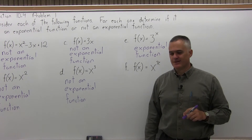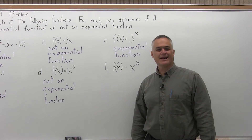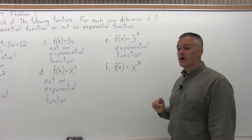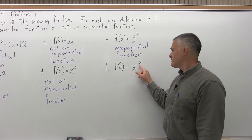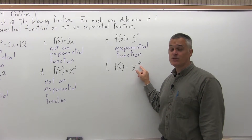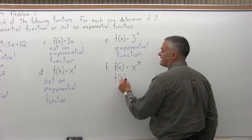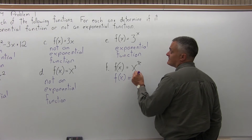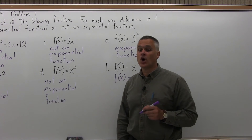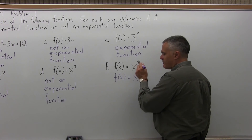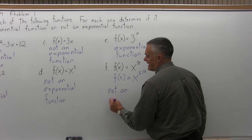Now, part f is sort of interesting. The function is f of x equals x to the pi power. Is that exponential or not? The question is: is the variable in the exponent? And the answer is no. The x, the variable, is in the base. Pi, if you remember from geometry, is really just a number — it's 3.14. So I could rewrite this as f of x equals x to the 3.14 power. Now it's a little more clear to see that it's not an exponential function. The answer in the end is not an exponential function.